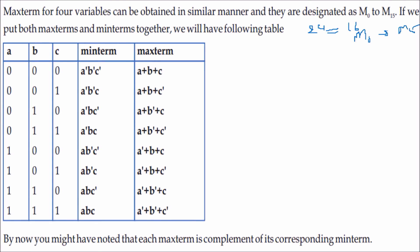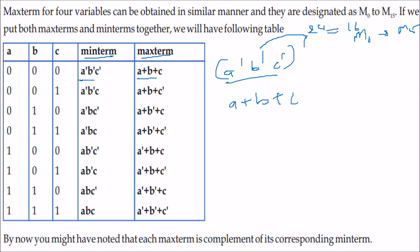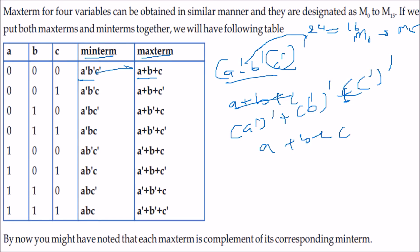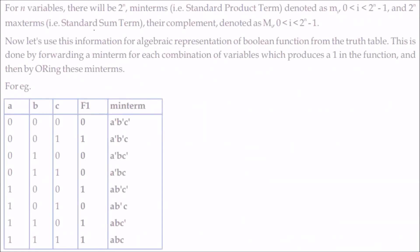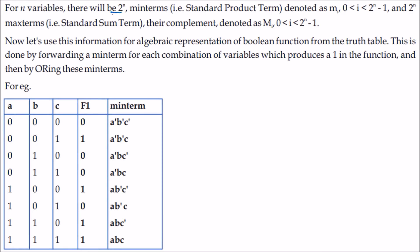If you compare minterms and maxterms together in the table, you see that they are exactly complements of each other. For example, a-dash dot b-dash dot c-dash complemented using De Morgan's theorem gives a plus b plus c. Complementing each variable and changing dot to plus yields the corresponding maxterm. For n variables, there will be 2 to the power n terms.